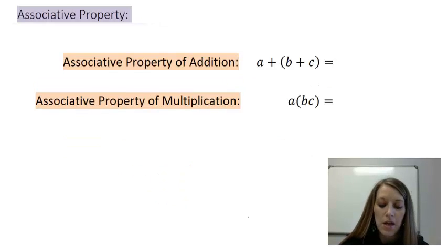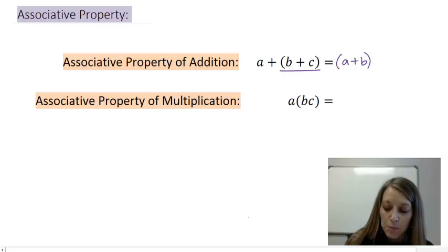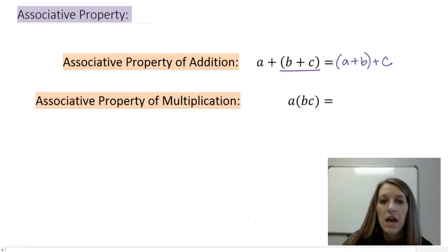Our next property is the associative property. And it comes into play when we're trying to add or multiply three different numbers. And just like commutative, we can see that order is not really specific in these two operations. So if I was trying to add A plus B plus C, it wouldn't matter if I needed to add B plus C first or if I wanted to add A plus B and then C. It will all work out the exact same way.